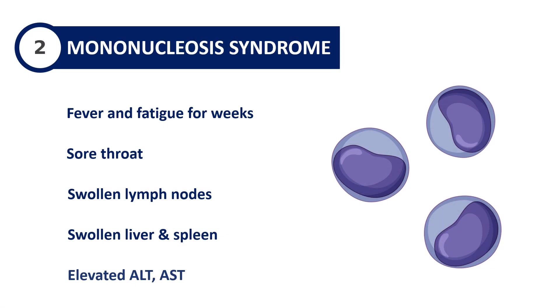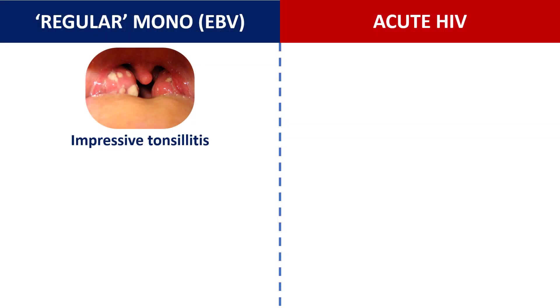So how is the mononucleosis-like syndrome caused by HIV different? Well, fever, malaise, muscle pain, sore throat, and swollen lymph nodes are all still present. But when you take a look at your patient's throat in acute HIV, generally you won't find impressive swollen tonsils with a lot of exudate like you would find in infectious mononucleosis.